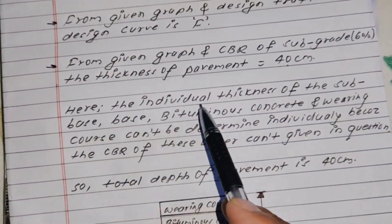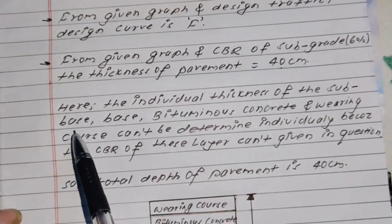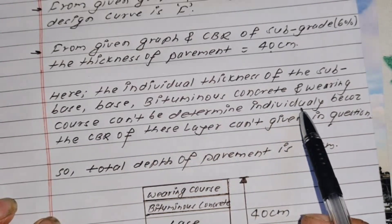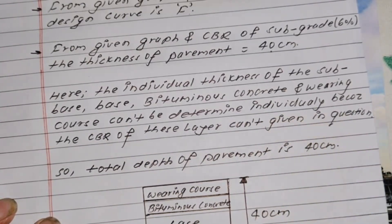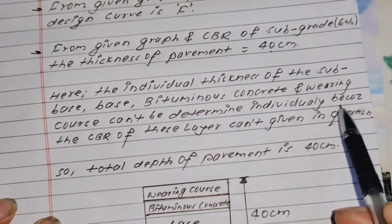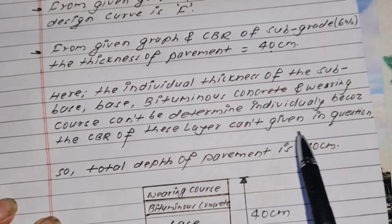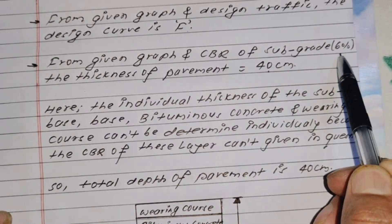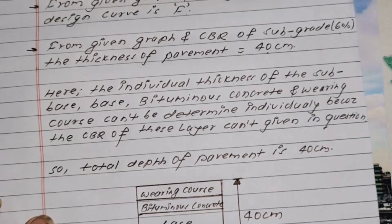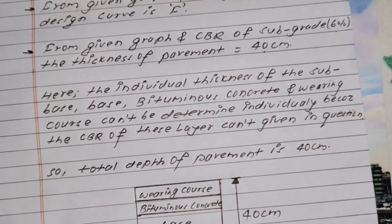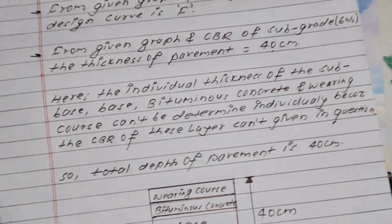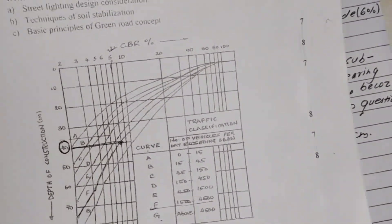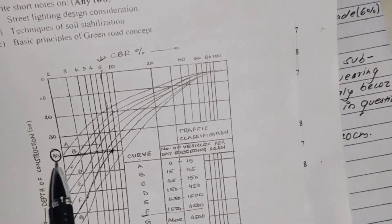The individual thickness of the sub-base, bituminous concrete, and wearing course cannot be determined individually — that is, they cannot be separated — because the CBR values for each individual layer are not given. Only the sub-grade CBR percentage of 6% is given. So only the total pavement thickness can be obtained from the curves.